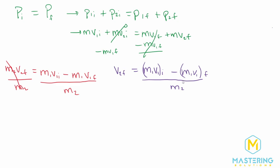So now we can plug in the values for this. So V2 final is going to be equal to 0.1 kilograms multiplied by 1.2 meters per second.